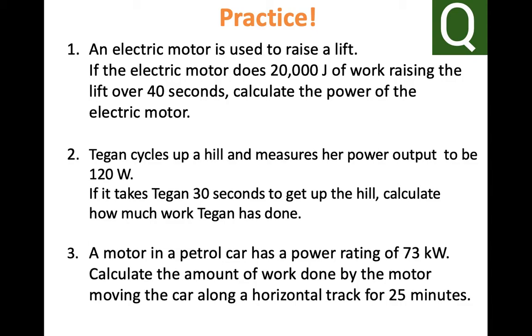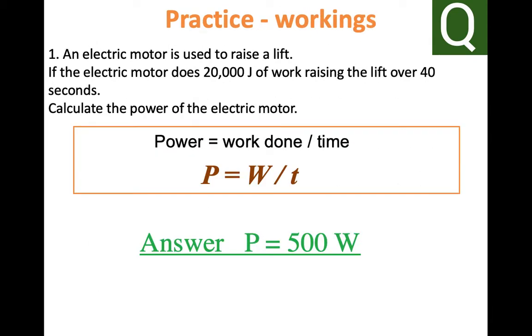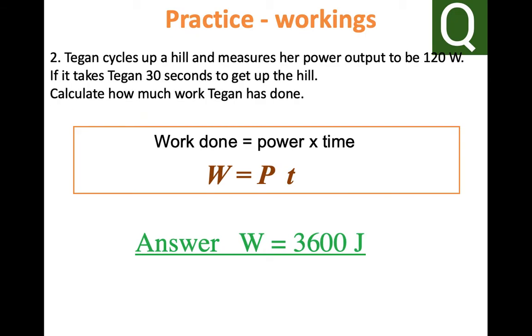Here are the answers. For question one, you should have power equals 500 watts. Remember, we are doing power equals work done divided by time taken, and your answer is 500 watts. For question two, to calculate the work done, we are doing power times time.